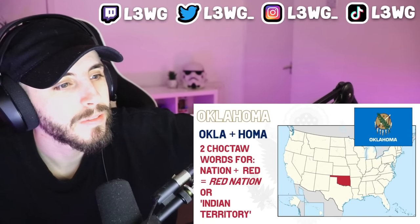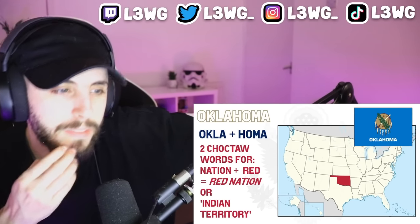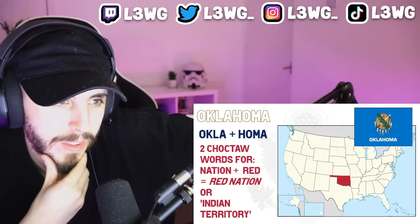Oklahoma is the putting together of two Choctaw words: 'Okla' and 'Homma.' In Choctaw, 'Okla' means 'tribe' or 'nation' and 'Homma' means 'red,' so 'red nation' — although a rough translation could also be 'Indian territory.'